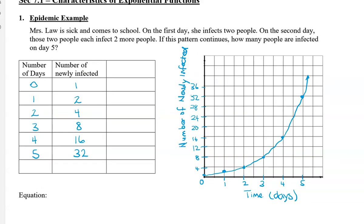Hopefully your graph is a little bit not as squiggly as mine. You can see that the graph goes up very, very rapidly. Now the next thing I want to do and show you is to write the exponential form of these values.